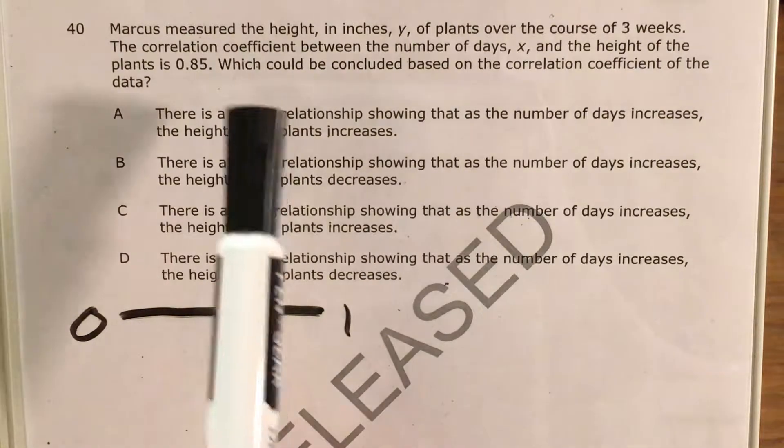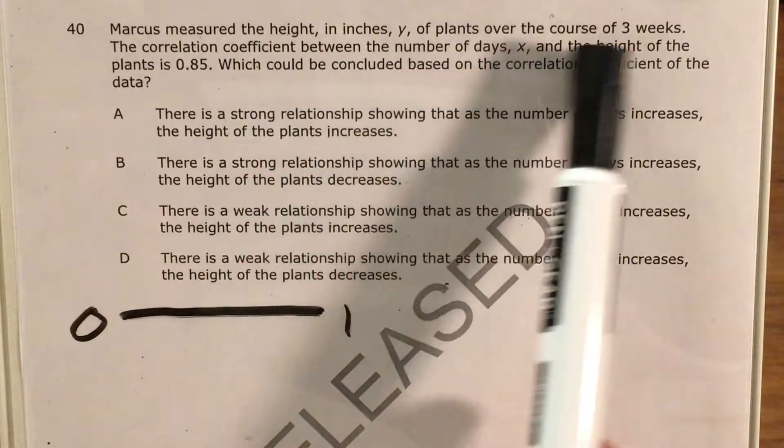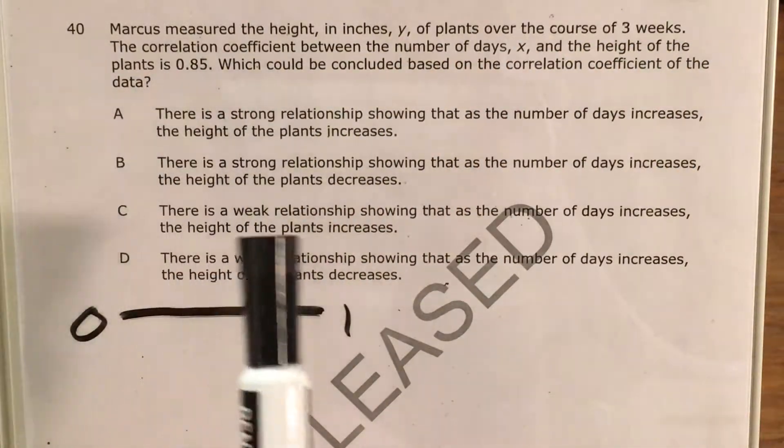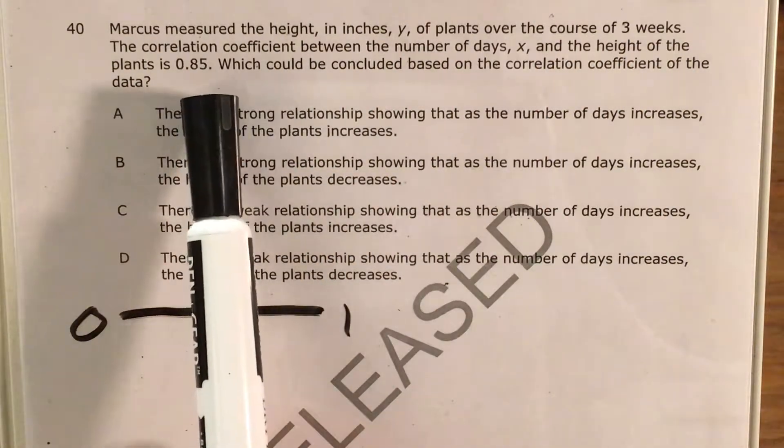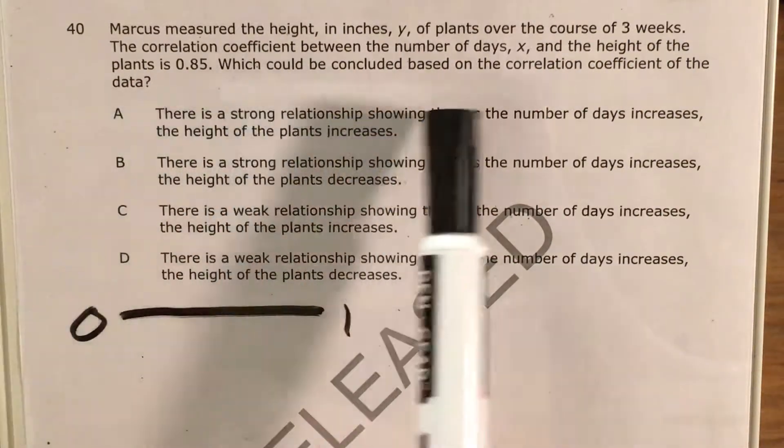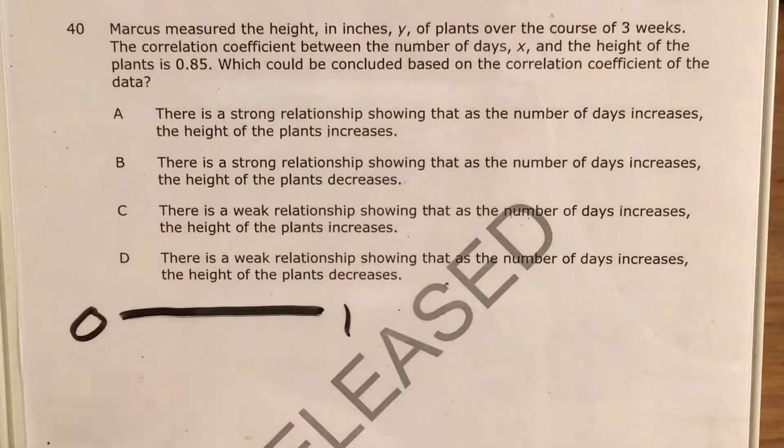The question tells us that Marcus measured the height in inches y of plants over the course of three weeks. The correlation coefficient between the number of days that have passed and the height of the plants was 0.85, and we're supposed to figure out which statement we can conclude based on the correlation coefficient of the data.